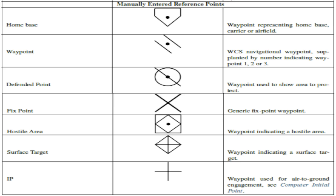We then have Defend Point, with the code DP. This would normally be an area for you to defend, or in some cases a concentration of friendly troops you need to be wary of during your attack. Below that we have Fixed Point — usually a predefined INS fixed point you could use for taking an INS update — and this has the code FP.